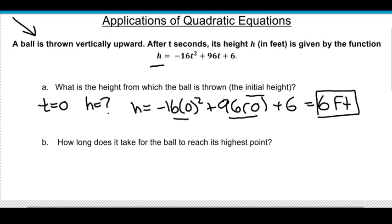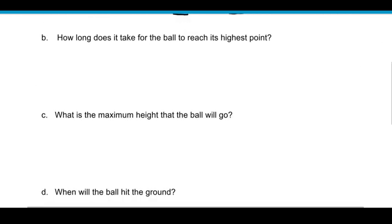So the next part says how long does it take for the ball to reach its highest point? This one's going to require just a little bit more work, and it also goes into part C. So what I'm going to have to do here, because it wants its highest point, if you think about the shape, if you were to throw something up, it goes up and then it falls down. This is actually a parabola, and so what we're really looking for here is this highest point, which is the vertex. So we are trying to find the vertex of a parabola.